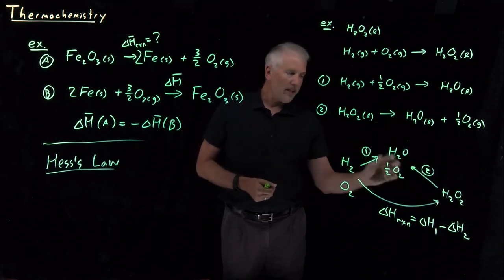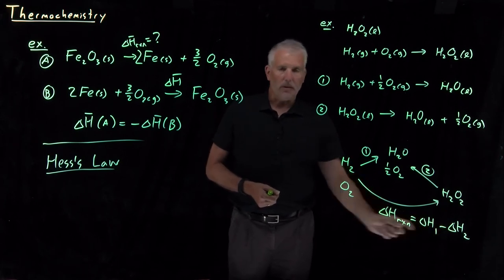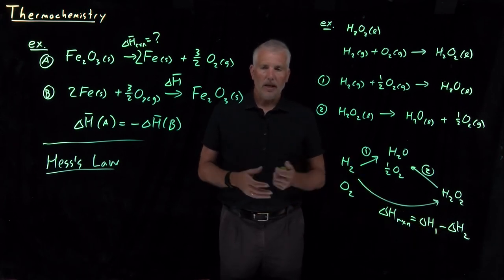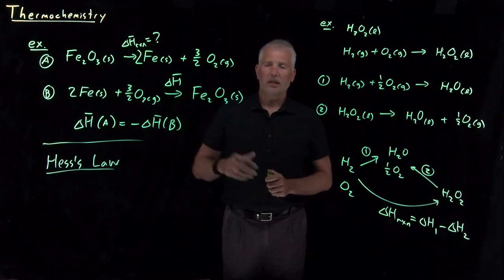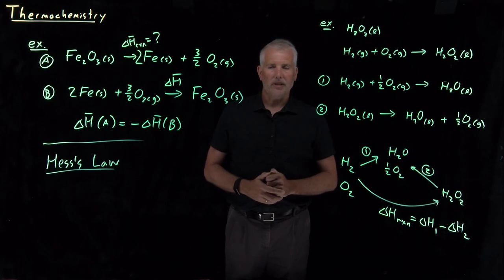If I flip one around and then add them together, I can treat them algebraically, add them together, but one of them having a negative sign. So I can combine reactions algebraically, and their enthalpy changes for those reactions combine algebraically in the same way.